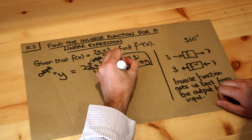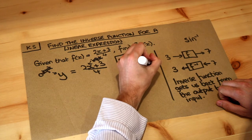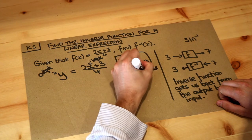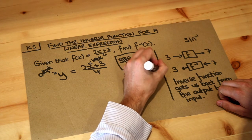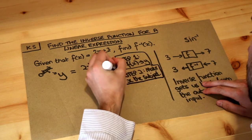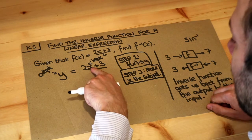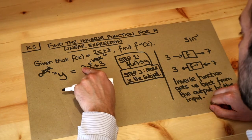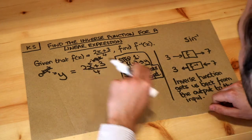So step 2 is to make x the subject of the formula. We explore how to change the subject of the formula in other videos, so do watch those if you don't know what I mean by that. So how do we get x on its own? Let's think about what's happening to x: it's been multiplied by 2, we're adding 3, then we're dividing by 4.